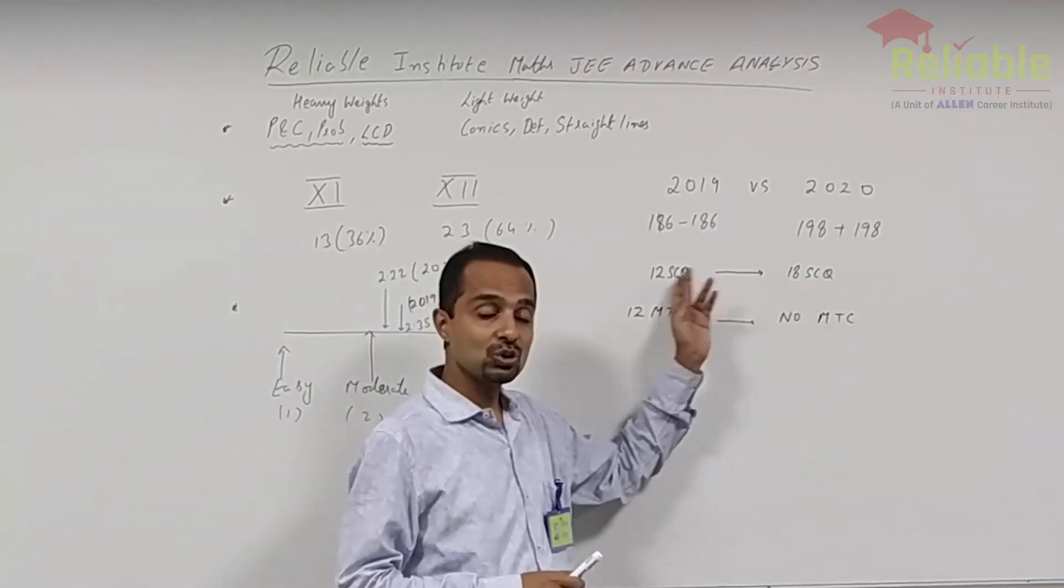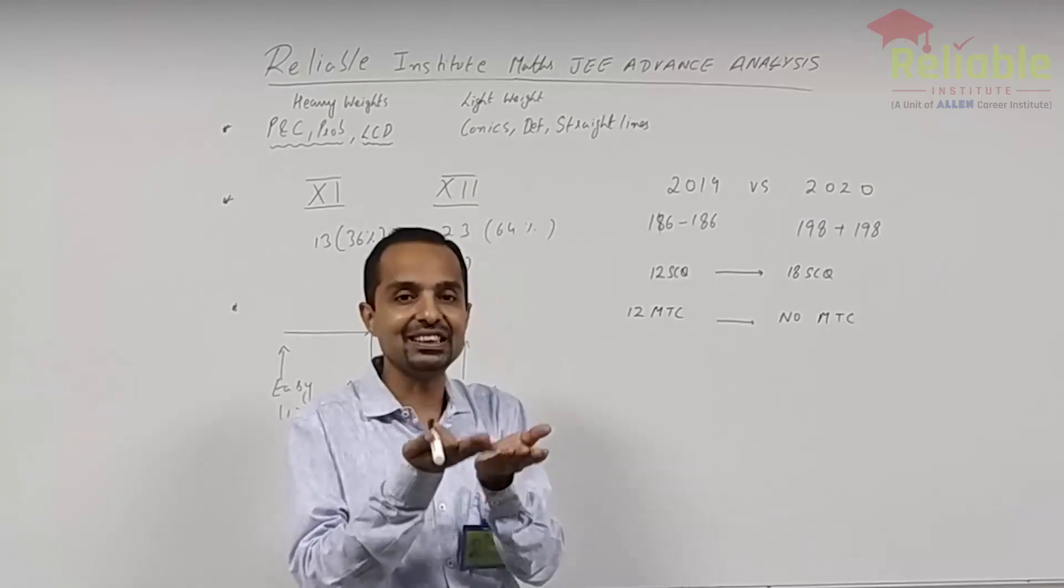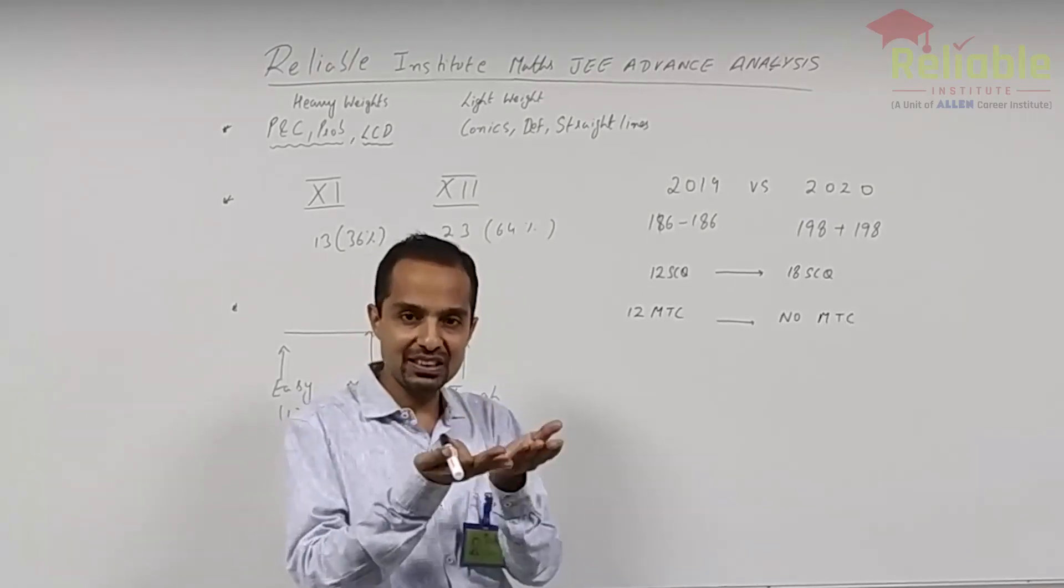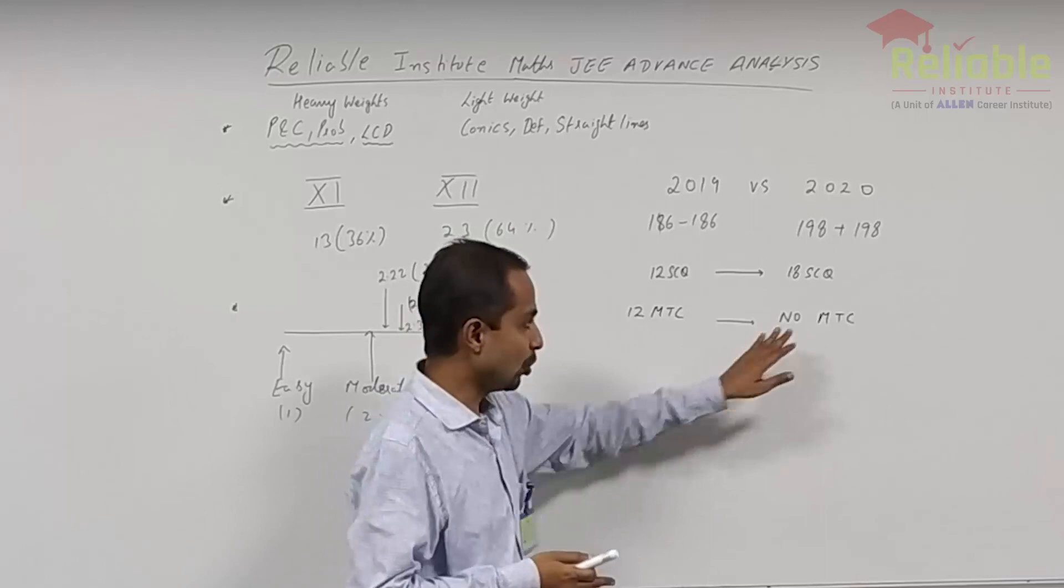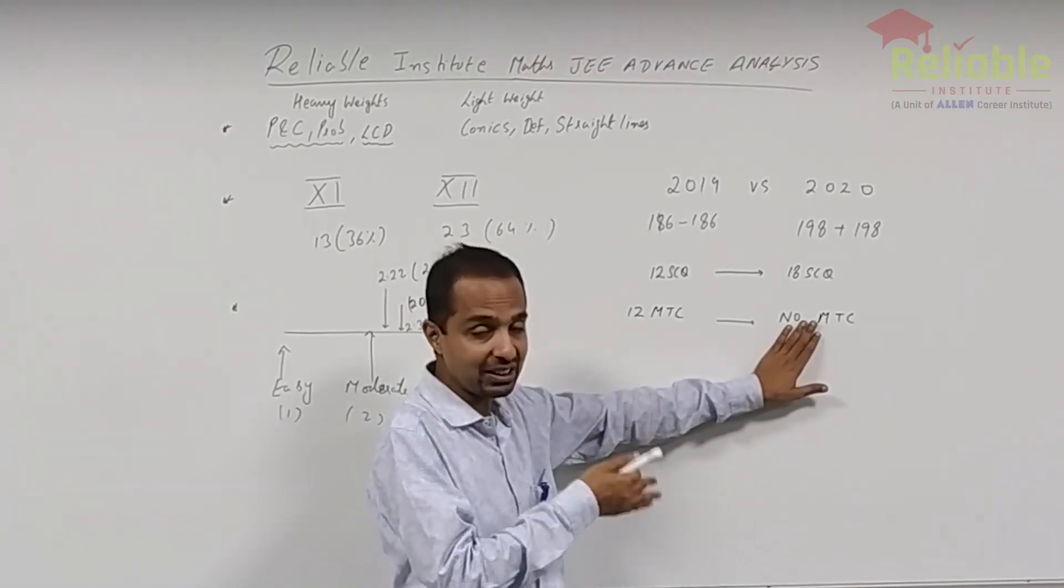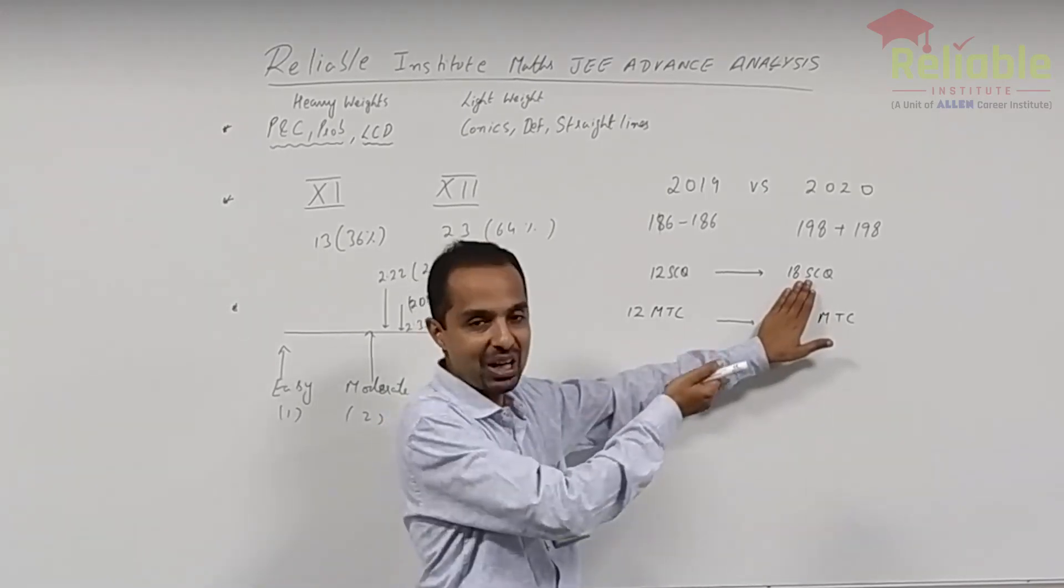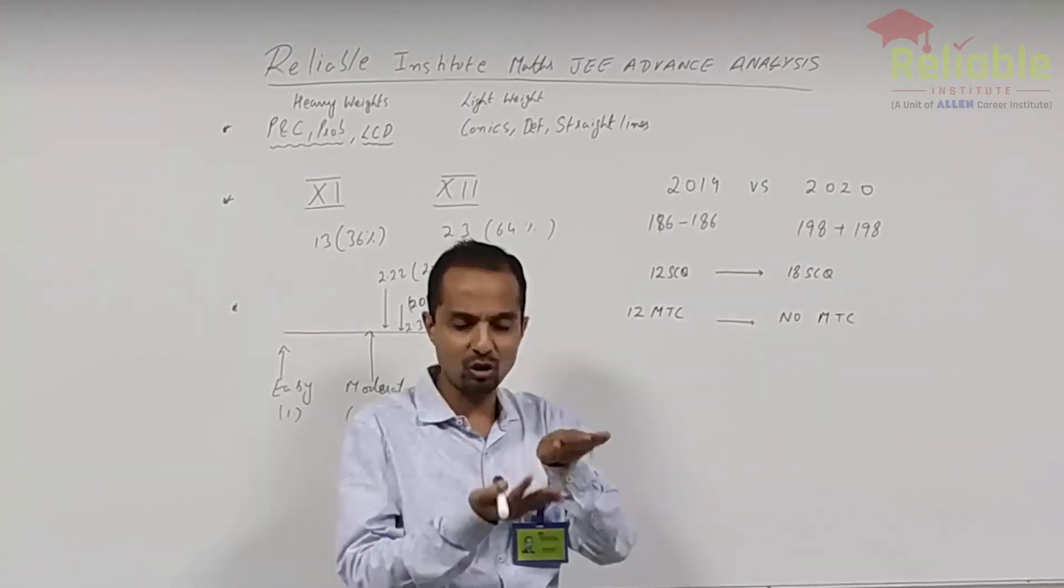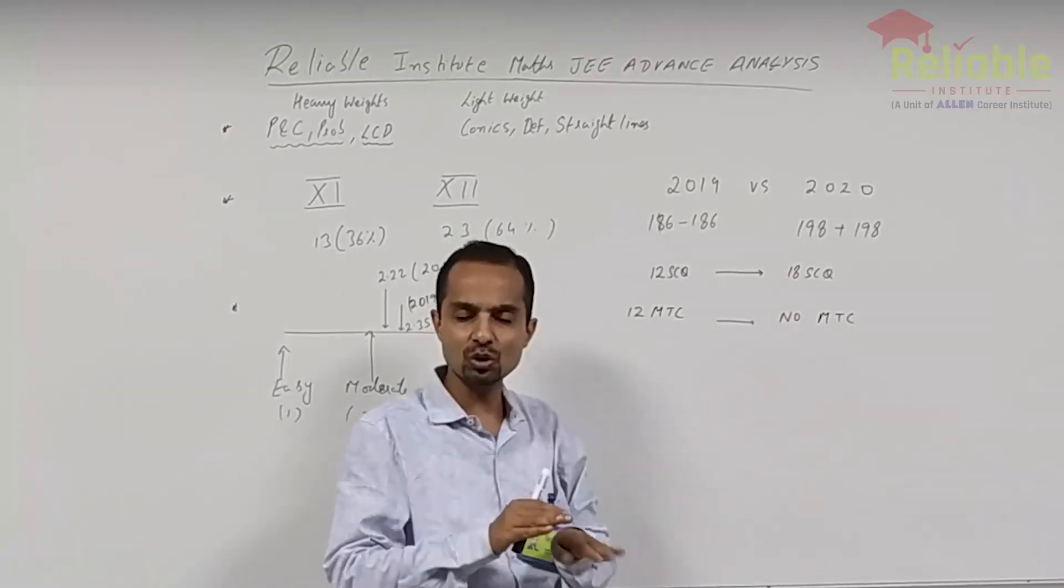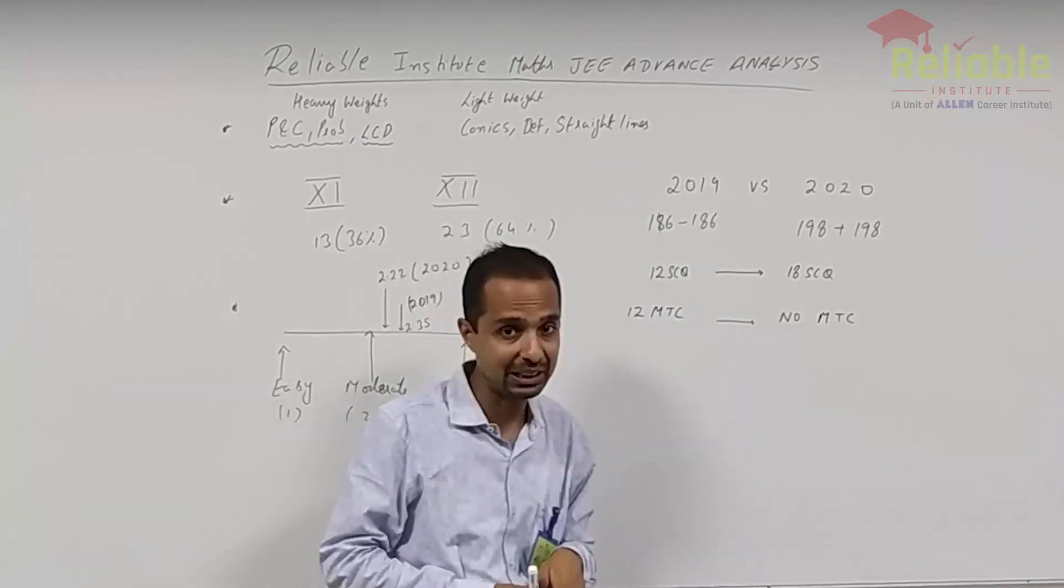But 18 SCQs over 12 SCQs previously will help in increasing the score further. Because SCQs are the main scoring. So on one hand, most scoring thing was not asked. But most scoring thing was more asked in 2020. So there were contradictory factors in these two things. So it becomes a level playing ground as compared to 2019.